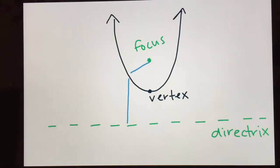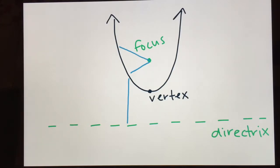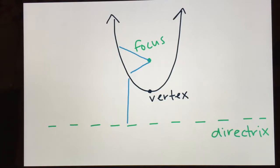My picture is not drawn perfectly, but ideally this length and this length would be exactly the same — straight down. Those would be exactly the same as well. And that's actually how you can define a parabola: by figuring out points that would be equally distant from the focus and the directrix, and then drawing all of those points, and it would give you the parabola shape.